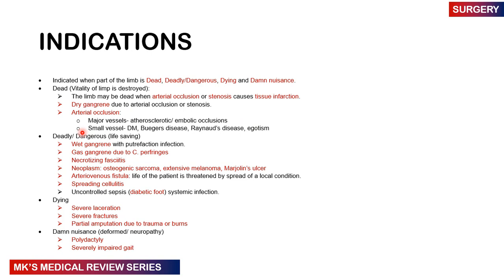Deadly or dangerous tissue requires life-saving amputation to save the patient's life. Examples include wet gangrene with putrefaction and infection, gas gangrene often caused by Clostridium perfringens, necrotizing fasciitis, neoplasms such as osteogenic sarcomas, extensive melanomas, and ulcers. You may also have arteriovenous fistulas, spreading cellulitis, or uncontrolled sepsis — for example a diabetic foot leading to systemic infection.